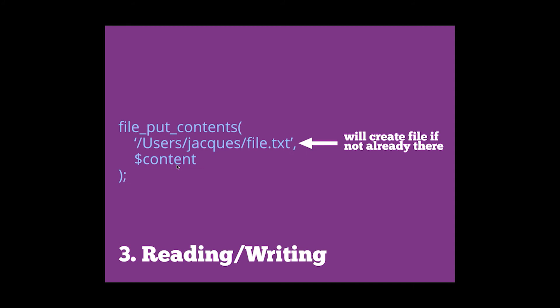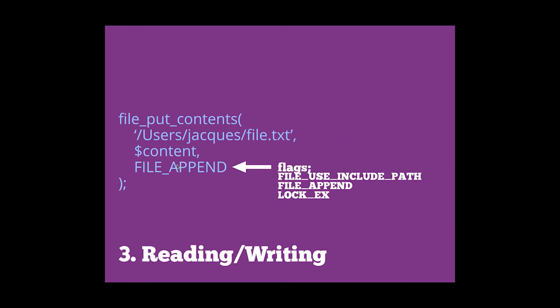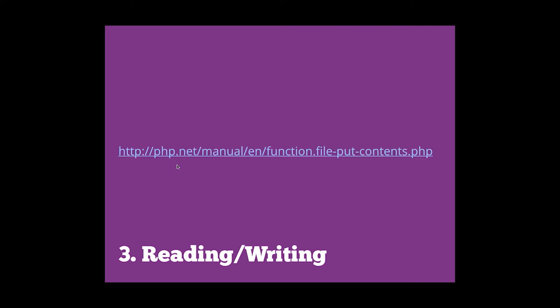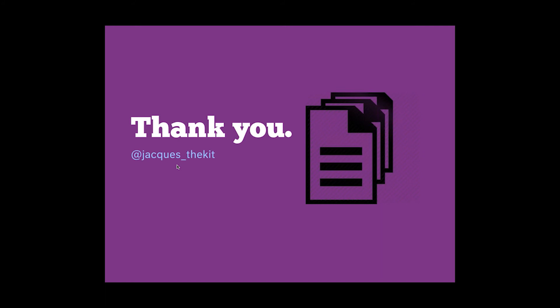For writing files, you have fopen(), fwrite(), and fclose(). fopen() opens a file, fwrite() writes contents to it, and fclose() closes the file. Or you could do it simply and use file_put_contents(). It's pretty straightforward: you tell it the location of your file and the contents to put into it. If you give it an address to a file that doesn't exist, it will create that file for you — very handy. For large files, if you add the FILE_APPEND flag, you can continue to dump contents into that file without storing it all in memory. Other available flags include FILE_USE_INCLUDE_PATH, FILE_APPEND, and LOCK_EX, which locks the file while you're making changes to it.